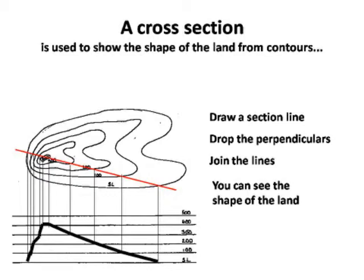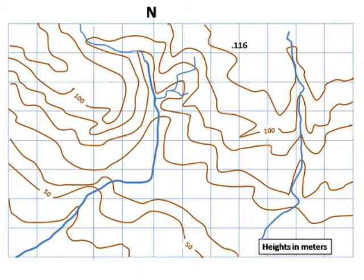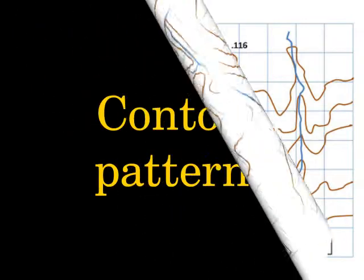To show the shape that contours represent, we draw a cross-section as shown here. We have the red line cutting through the contours, with black lines dropping down to a similar height on a grid, and the meeting points joined up to show us the shape of the land. Remember that on British Ordnance Survey maps, contours are marked every 10 meters — any change in ground less than 10 meters will not be shown.